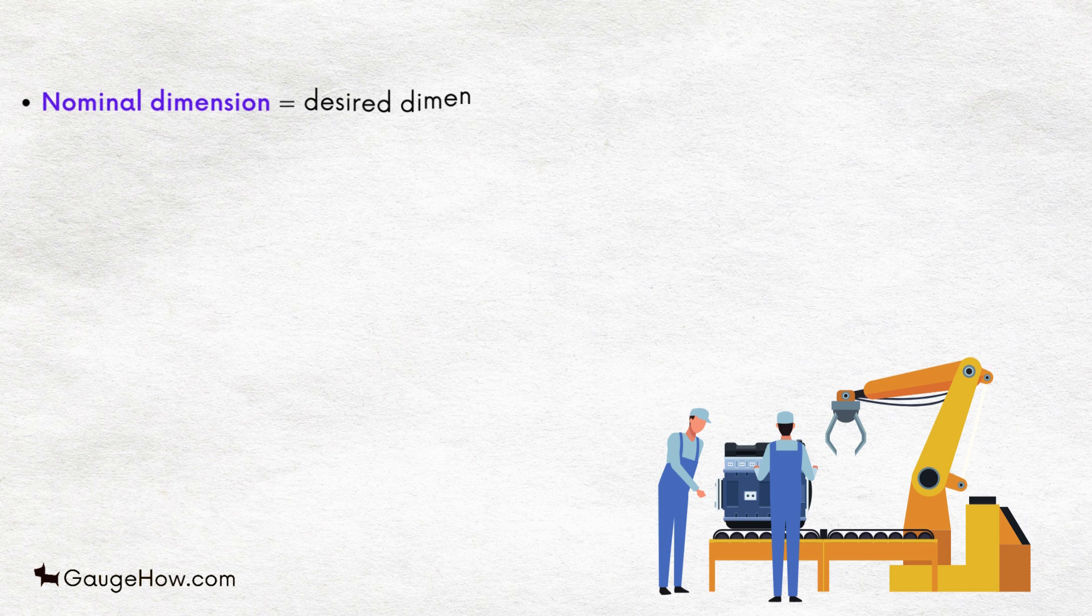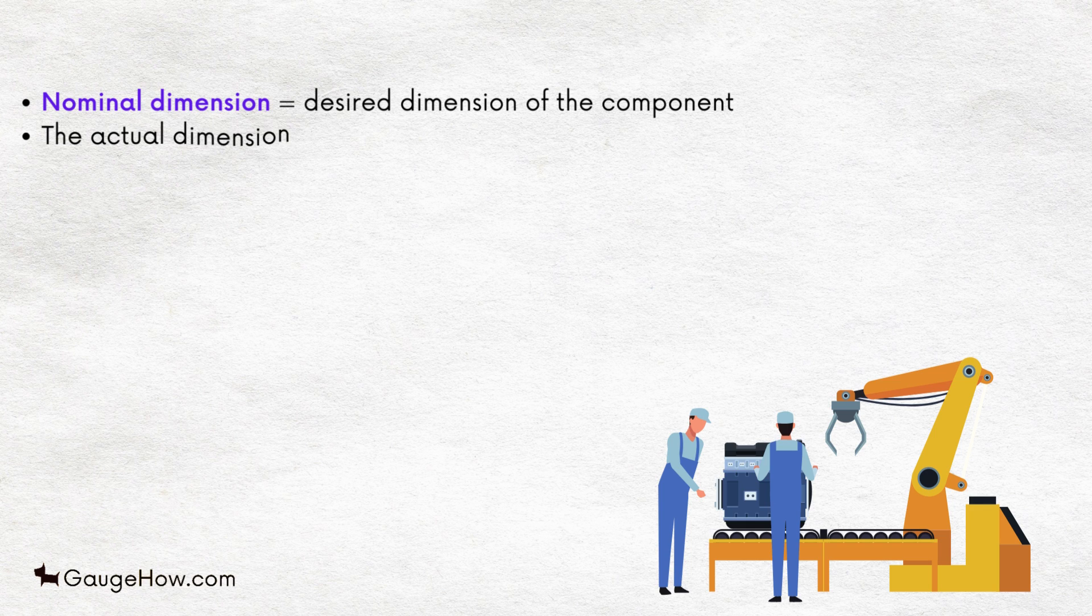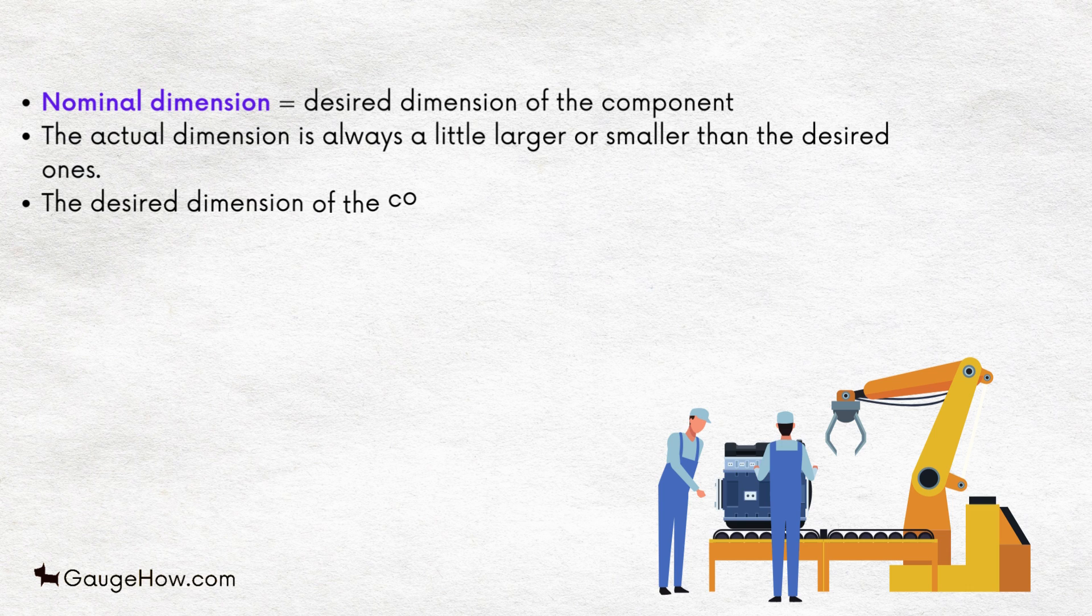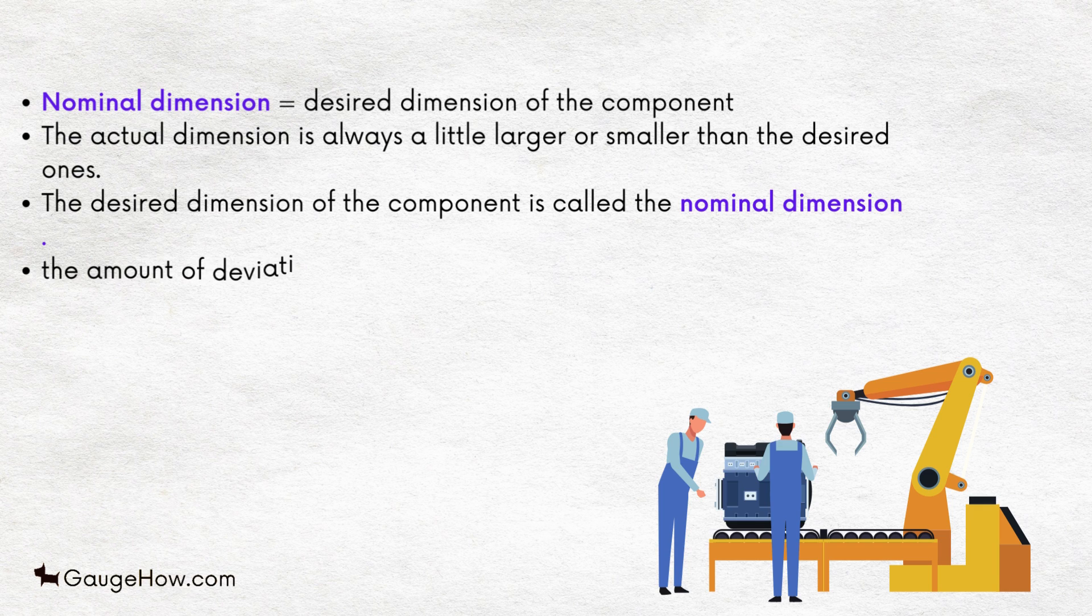The desired dimension of the component is called the nominal dimension and the amount of deviation of the actual dimension from the nominal dimension is called the tolerance. The extreme permissible dimensions of a part are called limits.